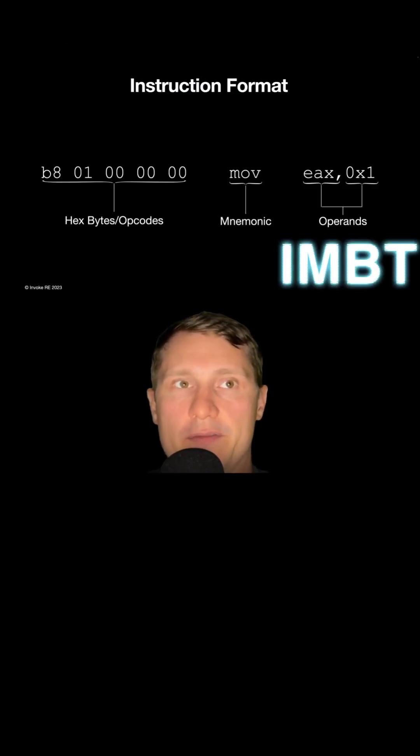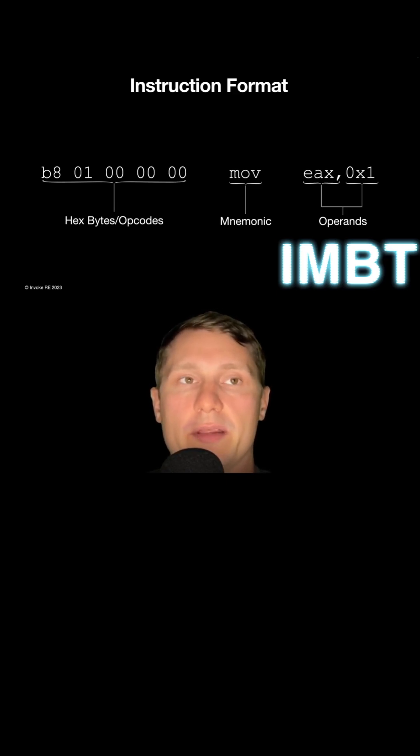In this example, the raw hexadecimal bytes of the complete instruction are followed by the instruction mnemonic, also known as the opcode, which is followed by the operands for the instruction. Raw hexadecimal bytes are translated into instructions using what's referred to as a disassembler, which are then interpreted by analysts in order to understand the operations being performed by the program. The mnemonics, or opcodes, are symbolic representations of the assembly instruction.